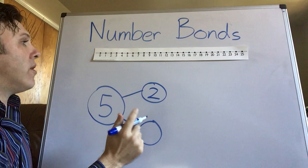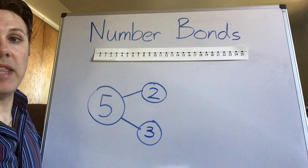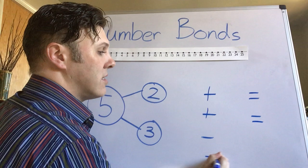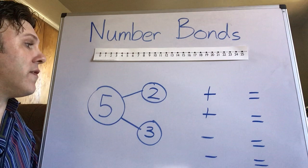So I know that two plus three equals five and then we can make our four equations. There's gonna be two additions and two subtractions all with these three numbers.